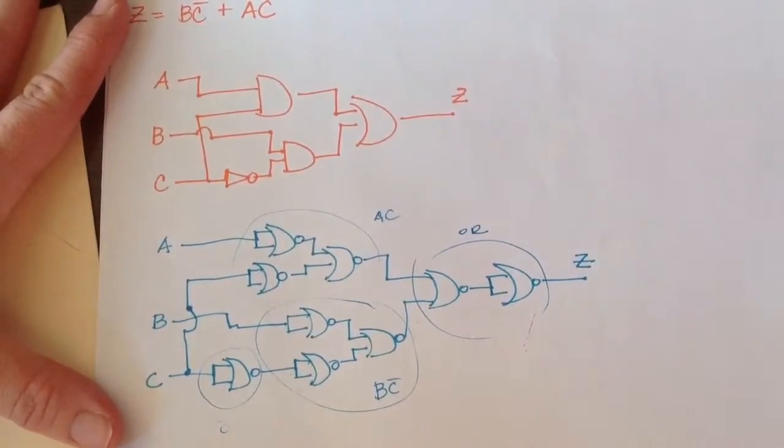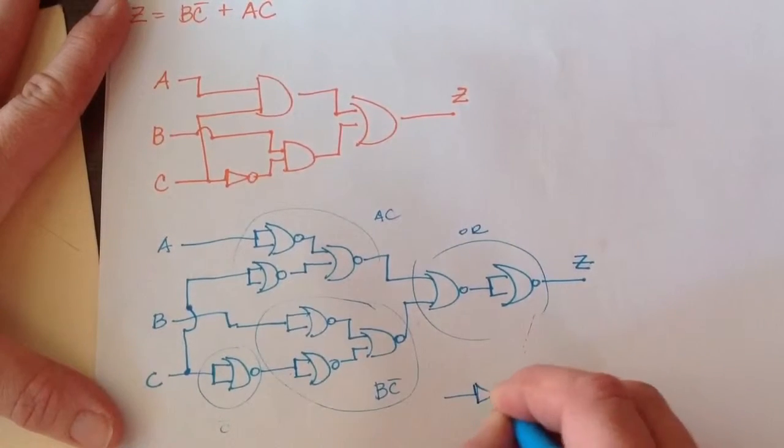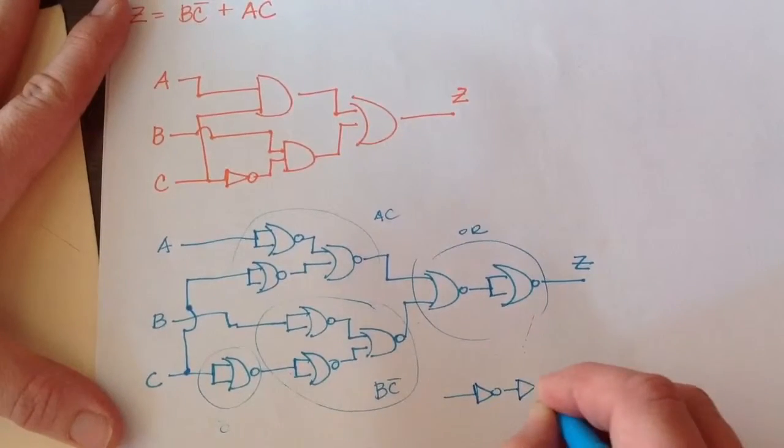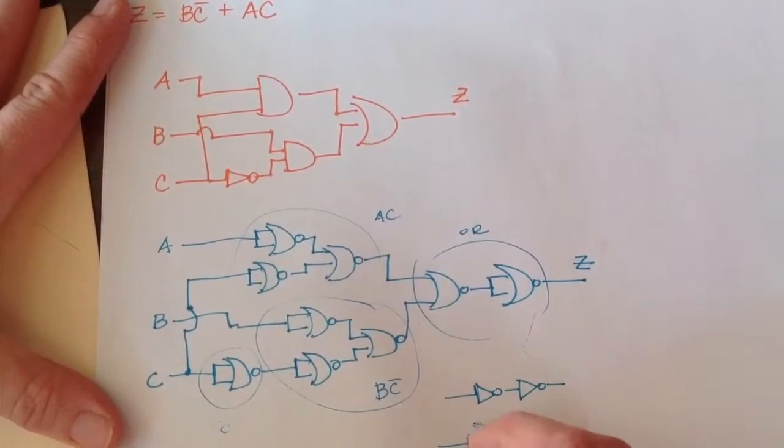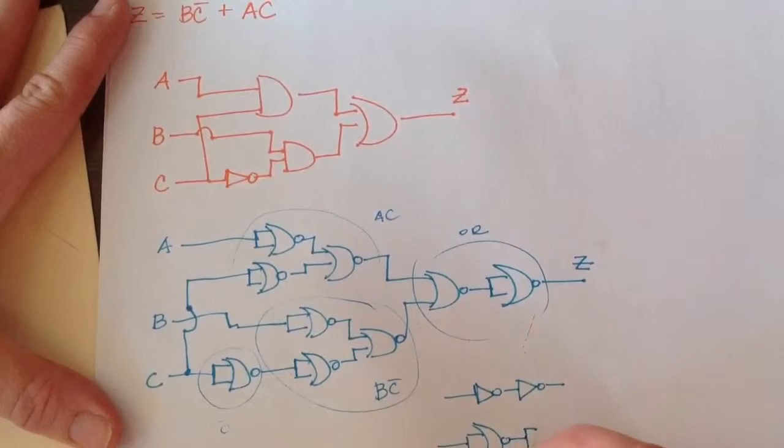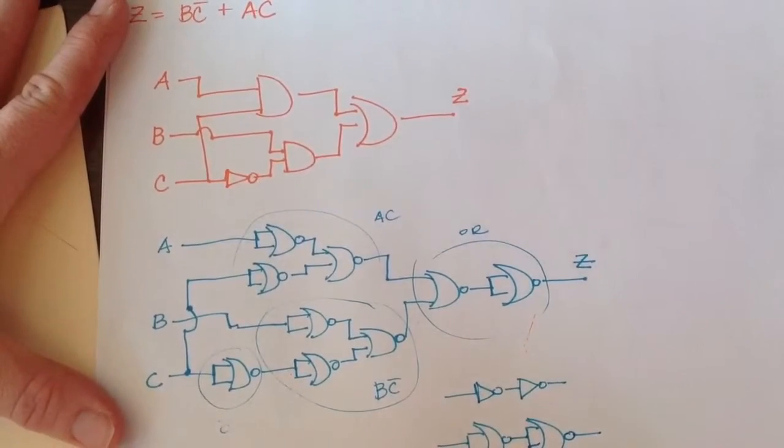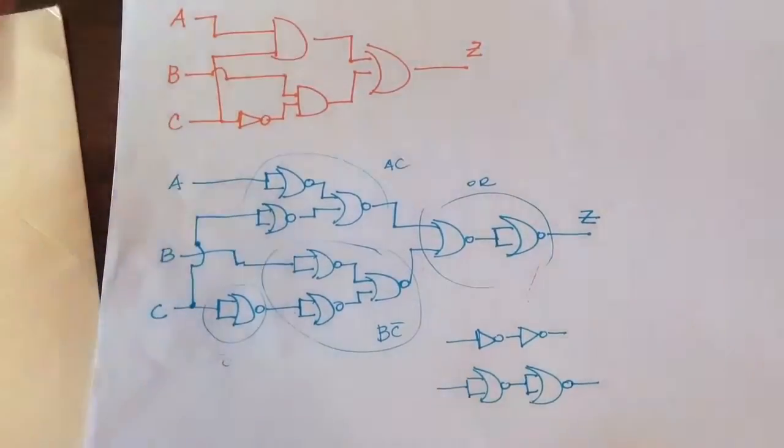So we want to eliminate anywhere there's the equivalent of a NOT gate or a double inversion. So that would look like this. So this is the combination we're looking for to eliminate.